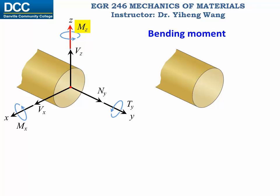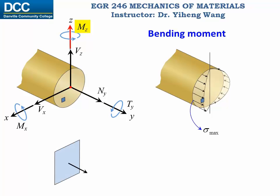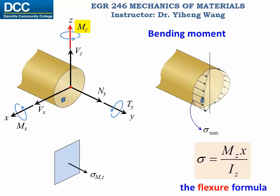For bending moment Mz about the z-axis, it also creates a linear normal stress distribution changing from zero at the centroidal z-axis to maximum at the location furthest away from the z-axis. For an arbitrary location, its normal stress caused by Mz is calculated by the flexure formula, where Iz is the moment of inertia with respect to the z-axis, and x is the perpendicular distance from this location to the z-axis.